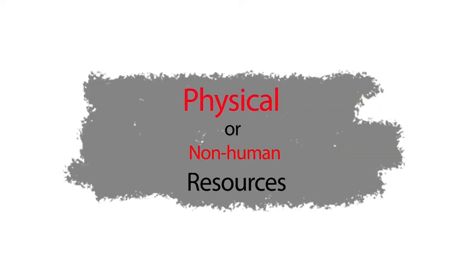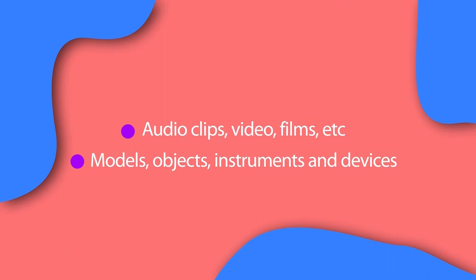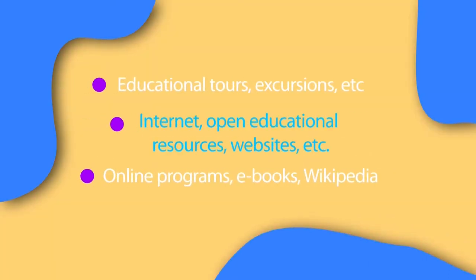Learning resources may include human or non-human resources. Non-human resources may include text materials like books, assignments, and worksheets; animation, images, pictures, painting, graph, and chart; audio clips, video, and films; models, objects, instruments and devices; educational tour and excursion; internet, open educational resources and websites; online programs, e-books, and Wikipedia.